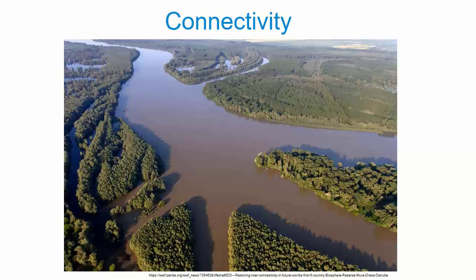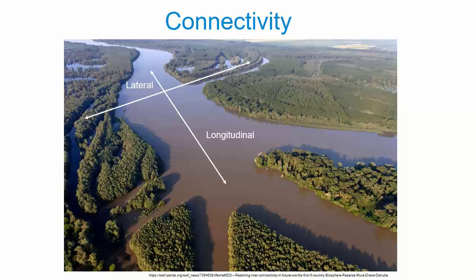The final aspect of basin condition we'll consider is connectivity, which determines the ability of matter and organisms to move through and between aquatic ecosystems. Three-dimensional connectivity is important. Longitudinal connectivity enables the natural downstream physical transport of water, sediments, energy in the form of organic matter, and entrained biotic material like seeds, algae, and larval fish. Movement upstream is important for migratory organisms. Lateral connectivity is important for maintaining floodplain and side channel environments, which rely on water, sediments, and biotic material from the main river, and rivers rely on the material washed back into them as water levels fall. These habitats are also important to river biota for feeding, shelter, and reproduction. Finally, vertical connectivity is important for exchange of surface and groundwater, which may sustain river flows during dry periods and is also important for regulating water quality.